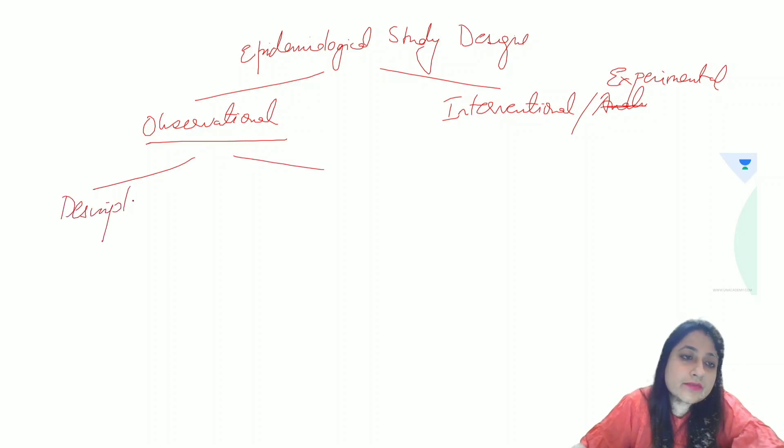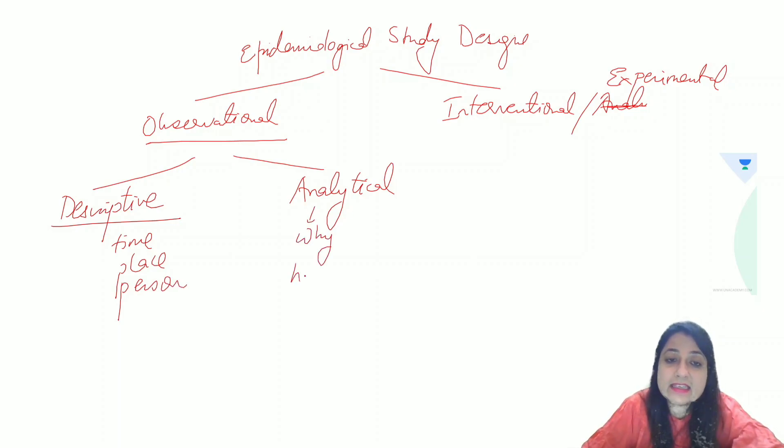In observational, it is first descriptive and then it is analytical. Descriptive, we describe a disease in terms of time, place and person and when we talk about analytical, we answer why the disease occurred and how the disease occurred. So these are all observational.